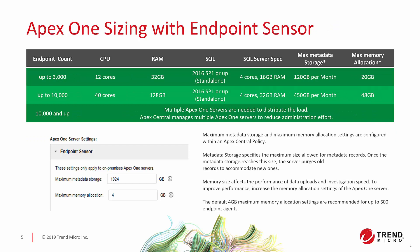Apex One sizing with Endpoint Sensor is a little different. There's a wealth of information sent up through Endpoint Sensor via the attack discovery engine and a lot of metadata, so there's a requirement for a lot of processing and data movement. Up to 3,000 agents, you're looking at 12 cores and 32 GB of RAM on Apex One, all requiring a standalone SQL Server running 2016 SP1 or later. The SQL Server spec for 3,000 agents is 4 cores and 16 GB of RAM.